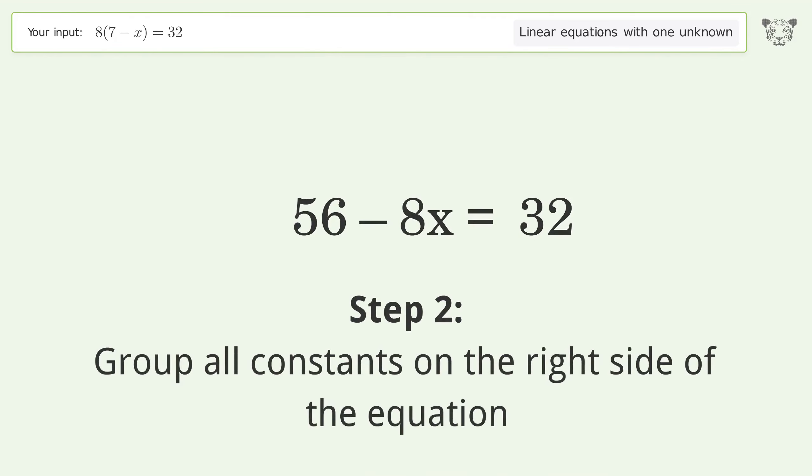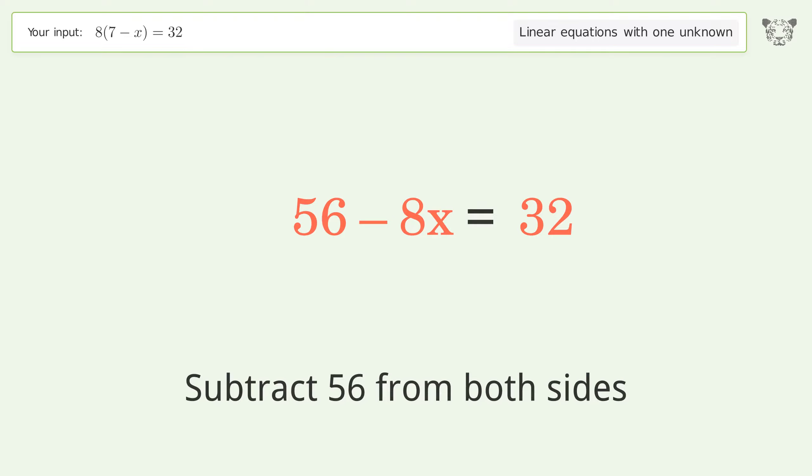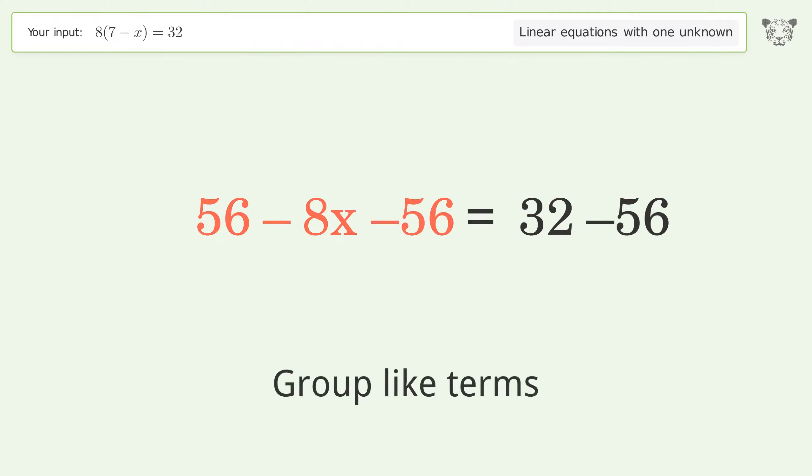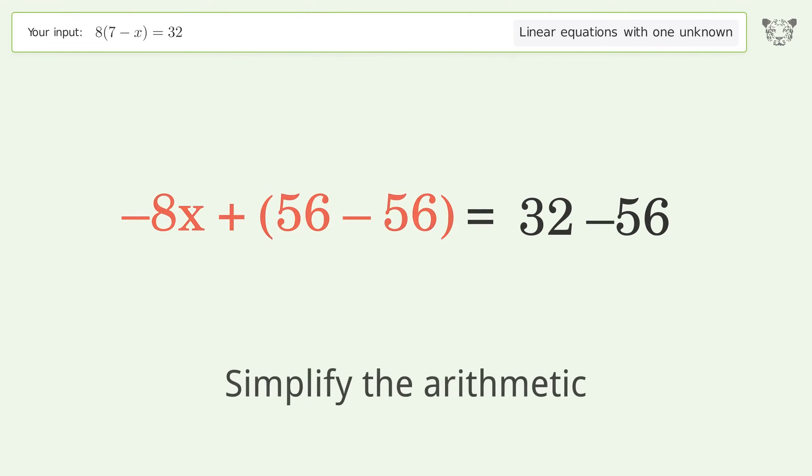Group all constants on the right side of the equation. Subtract 56 from both sides. Group like terms and simplify the arithmetic.